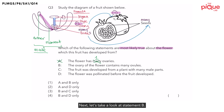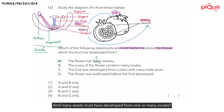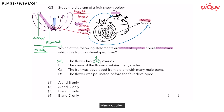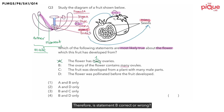Let us take a look at Statement B: The ovary of the flower contains many ovules. How many seeds does this fruit have? This fruit has many seeds, and many seeds must have developed from many ovules. This matches what Statement B says — that there are many ovules. Therefore, Statement B is correct.